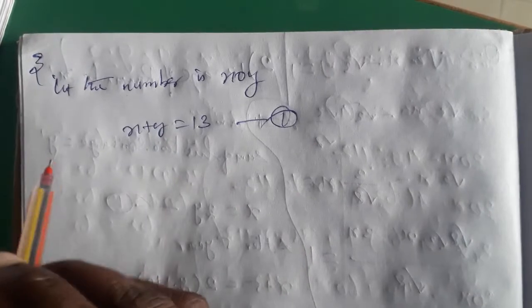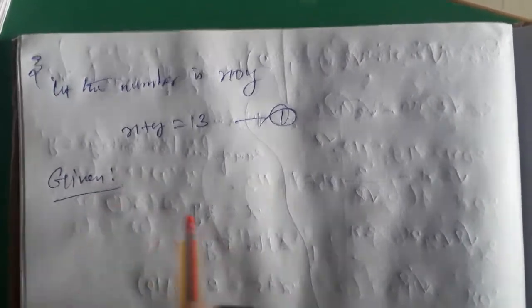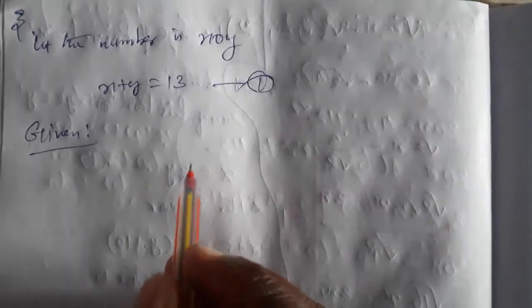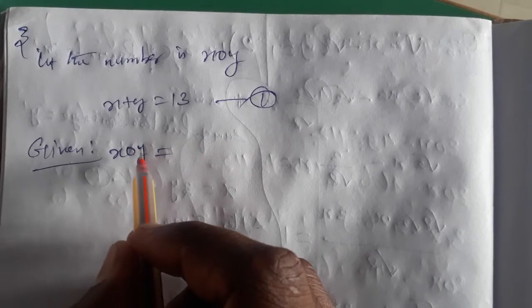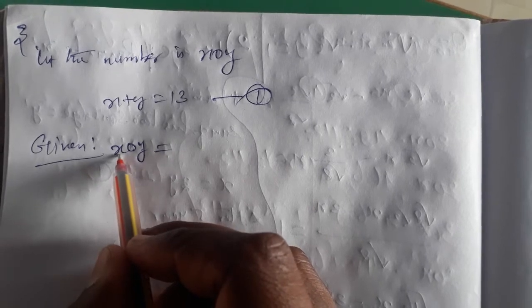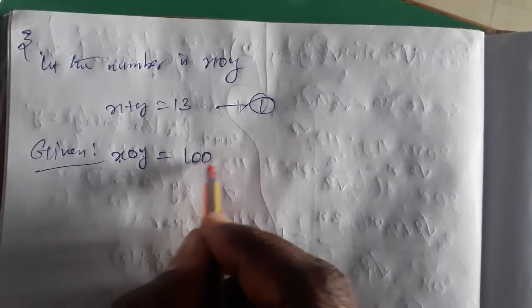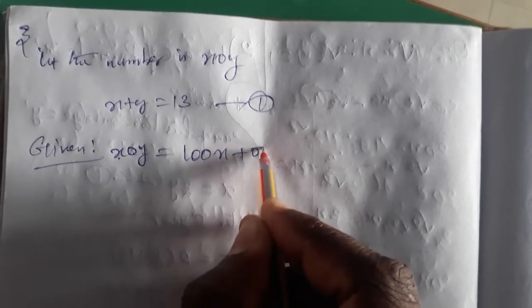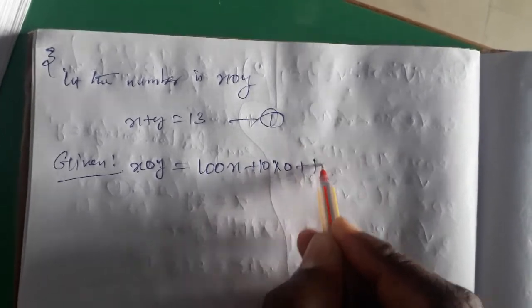If the digits are reversed, the given number is x, 0, y. So the original number: y is the units place, 0 is the tens place, x is the hundreds place. Therefore the original number equals 100x plus 10 into 0 plus 1 into y, which gives 100x plus y.